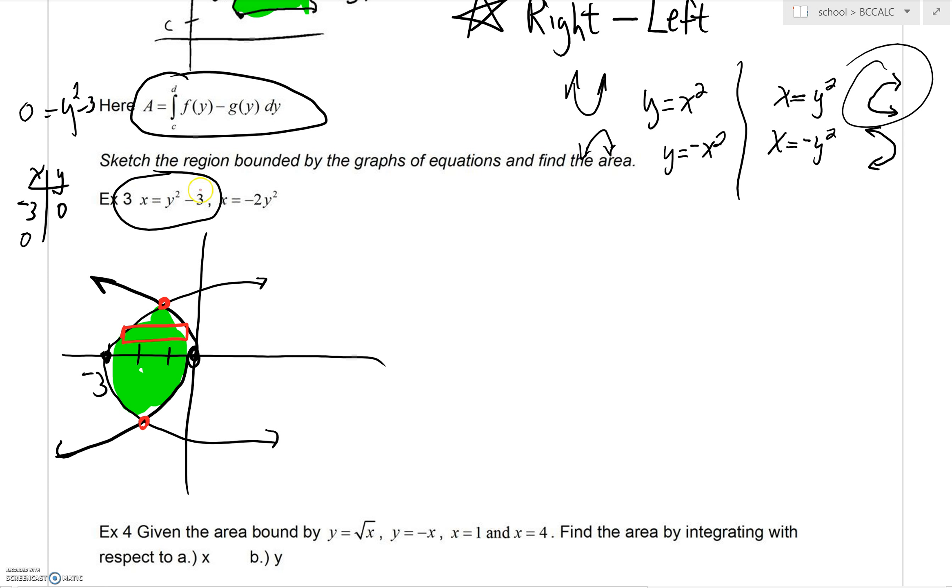Another huge issue would be what boundaries are we talking about? If you were to set your x's together, you'd have y squared minus 3 equals negative 2y squared. Minus a y squared from both sides, you'd have negative 3 equals negative 3y squared. Divide by negative 3 on both sides, and your y values would be positive and negative 1. You're going to integrate between negative 1 and positive 1. We want to do right minus left. Your right boundary would be negative 2y squared. And then I'm going to subtract my left boundary, x equals y squared minus 3. And we'll have our dy.